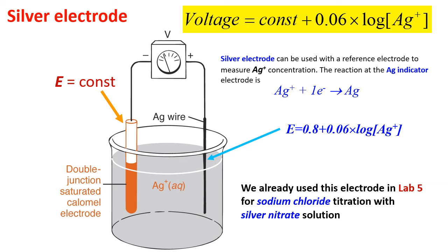We already used this electrode in Lab 5. Again, alternatively, you can deposit silver on surface of platinum and you'll have very high surface area and this electrode will be very convenient.